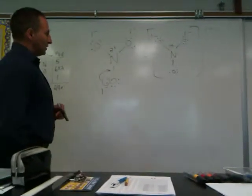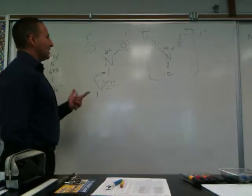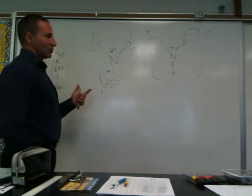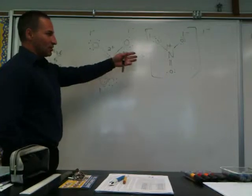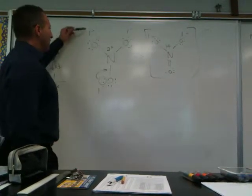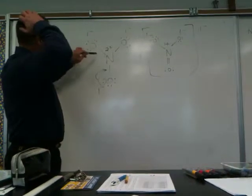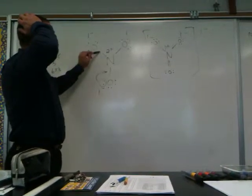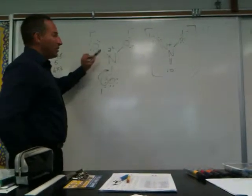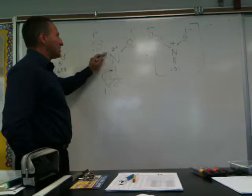Now what we look at is to make sure that the octets have been satisfied and that there are no formal charges. Or if there are formal charges, we can re-engineer the molecule to minimize the number of formal charges. We see here that these oxygen atoms each have fulfilled octets. They each have 2, 4, 6, 8 electrons around them. And when it comes to counting octets, a bond, though shared, still counts for 2.